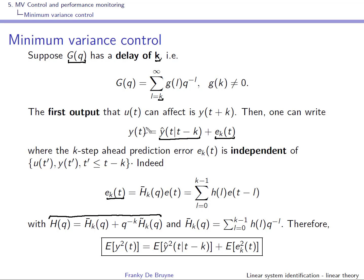If we write the variance, it's the variance of the K-step-ahead prediction plus the variance of the error E of K T. This is because they are independent. If they had been dependent, there would be an additional term, but this is not the case here. And this is what we'll use to construct the minimum variance controller.